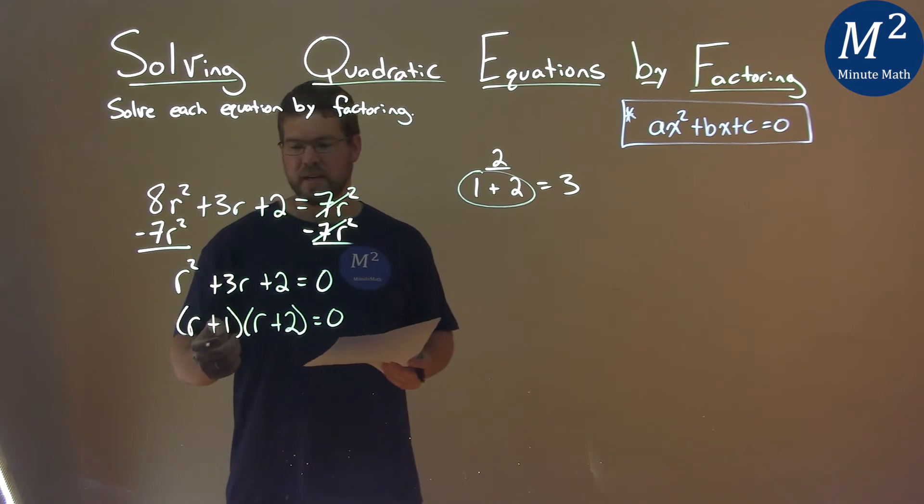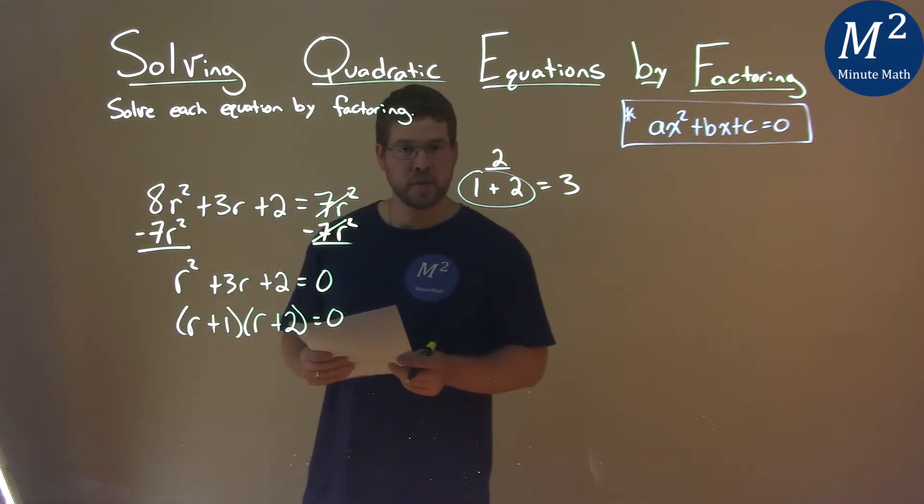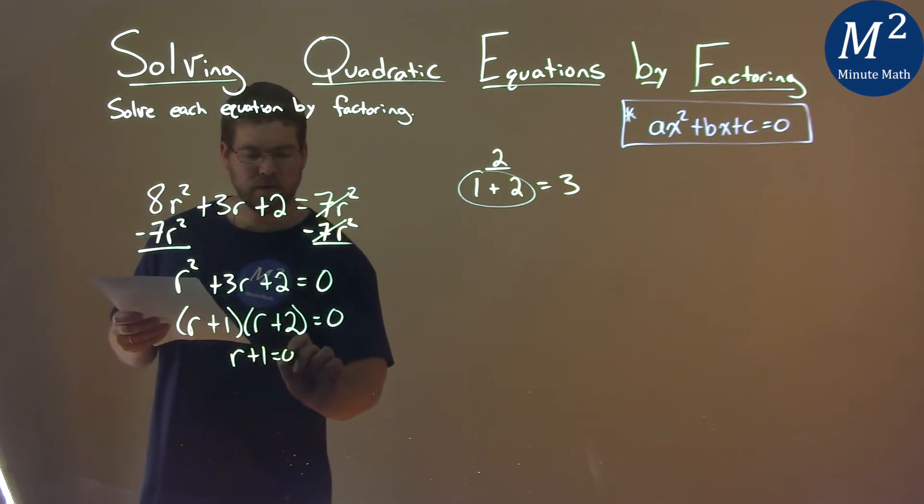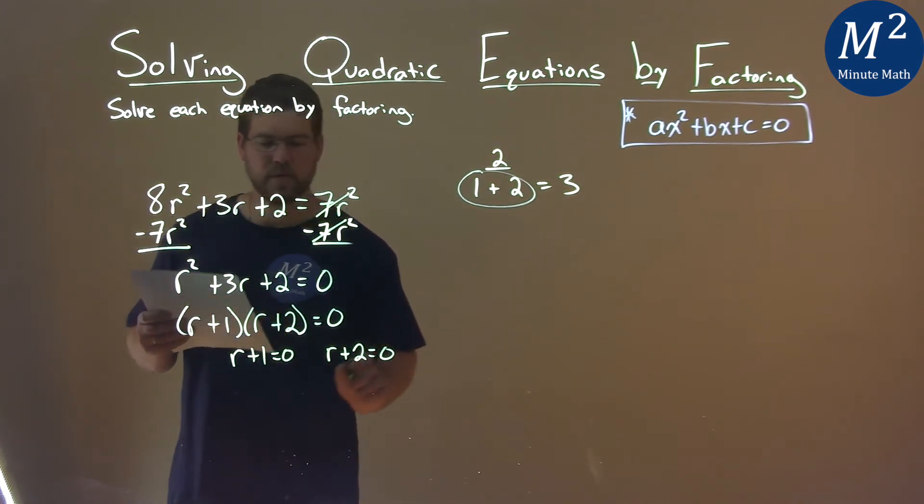Now to solve this, we set each one of these parentheses individually equal to 0. r plus 1 equals 0, and r plus 2 equals 0.